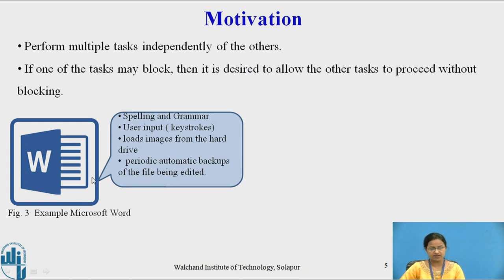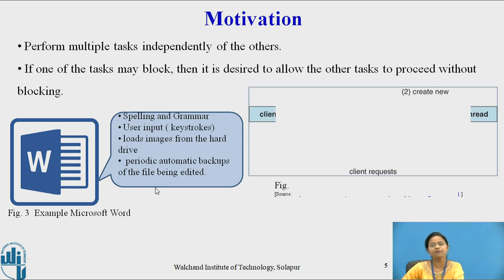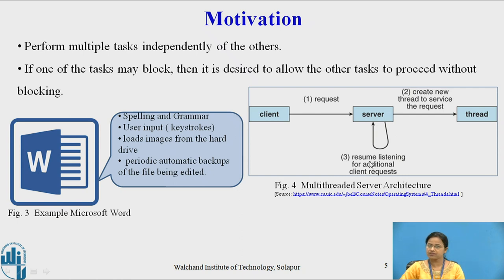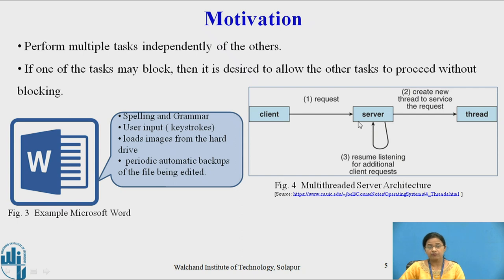Because this process contains multiple threads, it is able to perform multiple tasks at a time. Another example of multi-threading is client-server architecture. The client sends a request to the server. The server creates a thread to process that request and resumes listening for new requests from other clients. The same or another client may send a request again, and the server creates another thread to process it. In this way, a multi-threaded server architecture can be developed where the server performs multiple tasks by creating multiple threads.